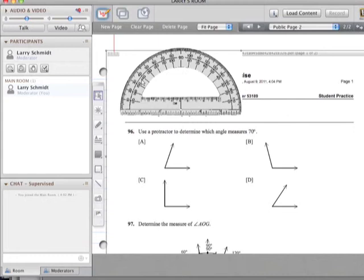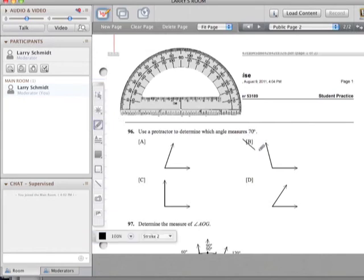I think I know which one is the right answer already. It says we're looking to determine which angle measures 70 degrees. Well, angle B is wider than a 90 degree angle, so I don't think it's going to be B. So we'll cross that one off.